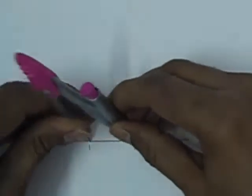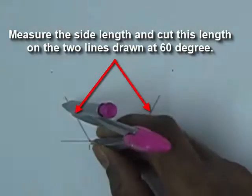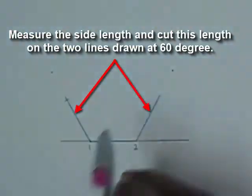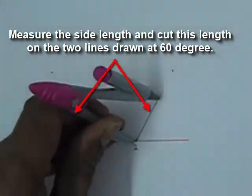Now we measure the length of one of the sides of hexagon which is 30 mm and we cut this length in these two other sides of hexagon.